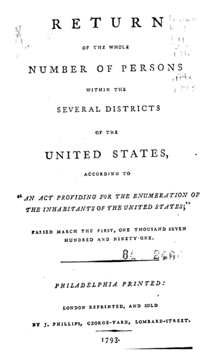In 1997, OMB issued a Federal Register notice regarding revisions to the standards for the classification of federal data on race and ethnicity. OMB developed race and ethnic standards in order to provide consistent data on race and ethnicity throughout the federal government. The development of the data standards stems in large measure from new responsibilities to enforce civil rights laws. Among the changes, OMB issued the instruction to mark one or more races.